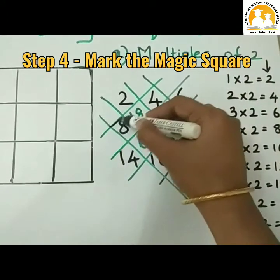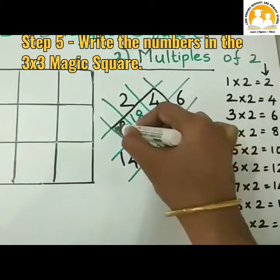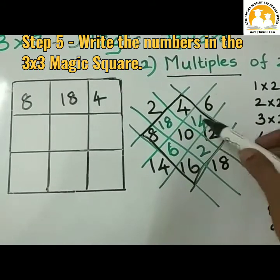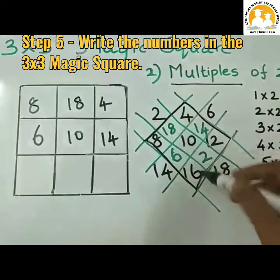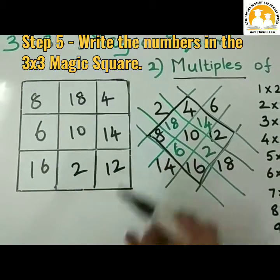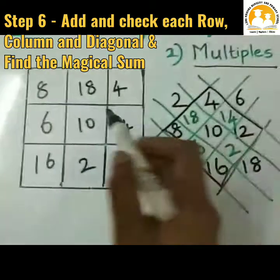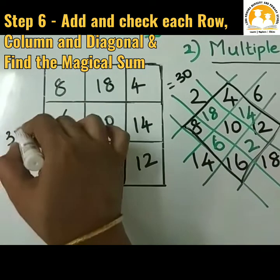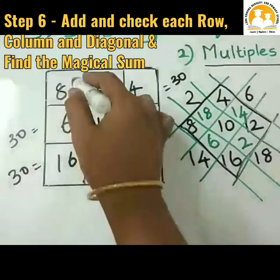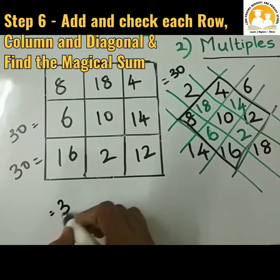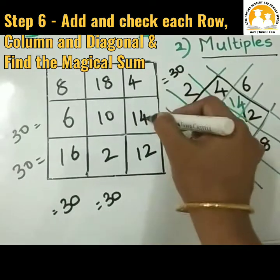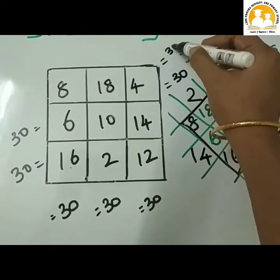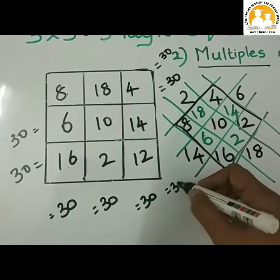Now let us mark the magic square. Adding each row: 16 plus 2 plus 12 is equal to 30. Adding each column: 8 plus 6 plus 16 is equal to 30; 18 plus 10 plus 2 is equal to 30; 4 plus 14 plus 12 is equal to 30. Diagonals: 16 plus 10 plus 4 is equal to 30; 8 plus 10 plus 12 is equal to 30. The magical sum is 30.